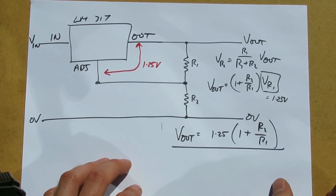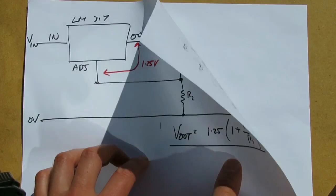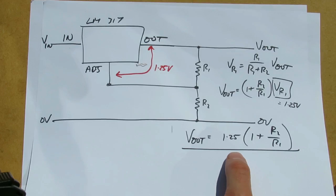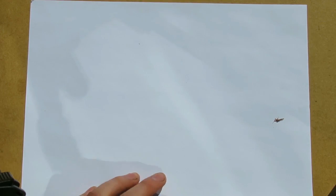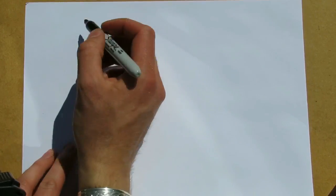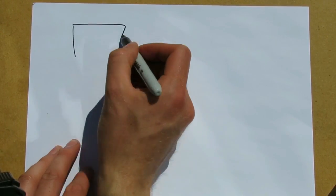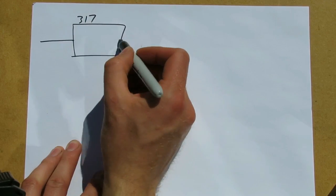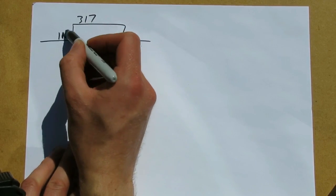So what do we do if we want to make a constant current source instead of a constant voltage source? We again have our 317 input, output, and adjustment terminals.